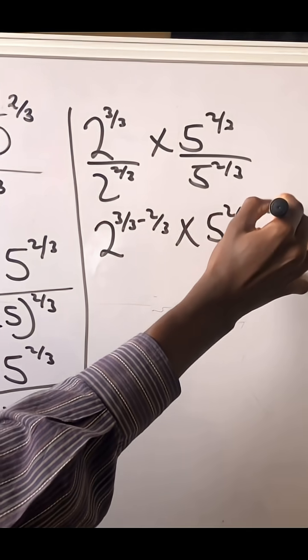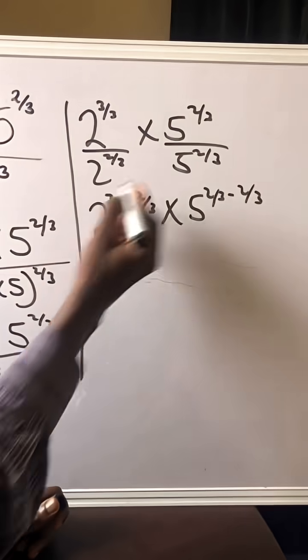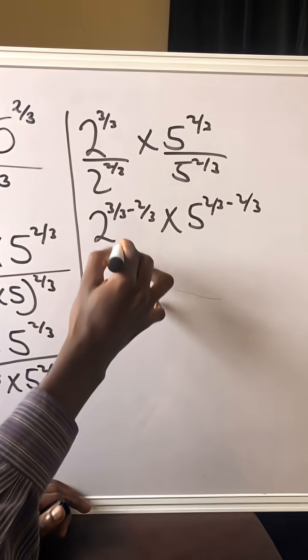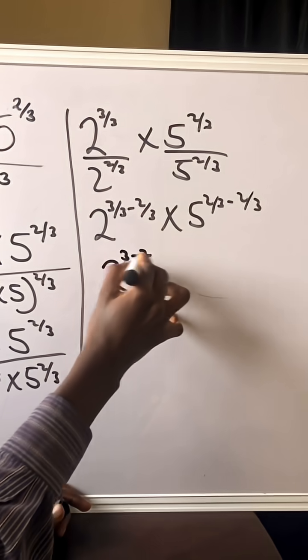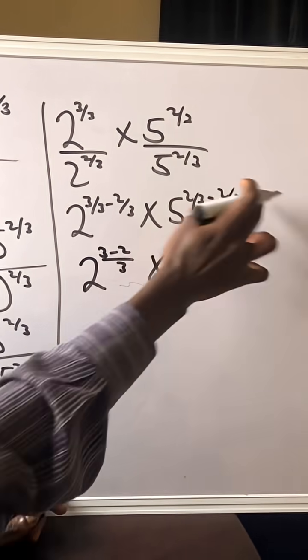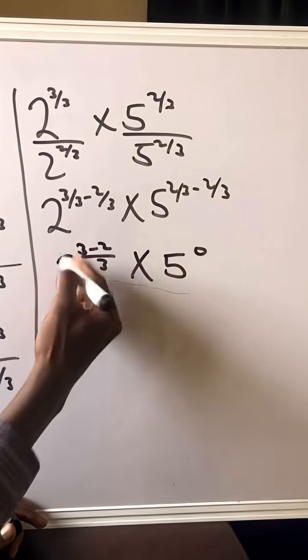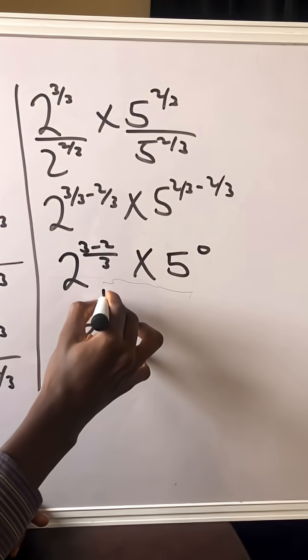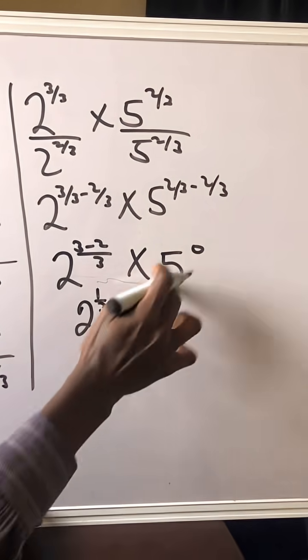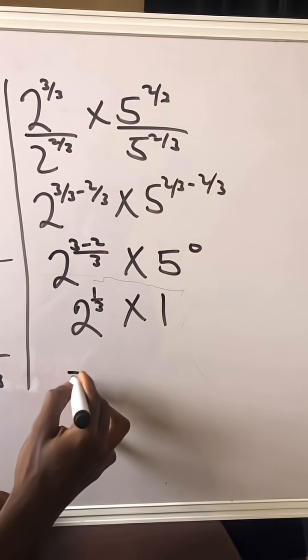We gotta do this. You gotta do subtraction with fractions. This is 3 minus 2 over 3, times this minus this is basically 0. And this is 2 to the power of 1 over 3 times 5 to the power of 0 equals 1, and then 1 times this is this.